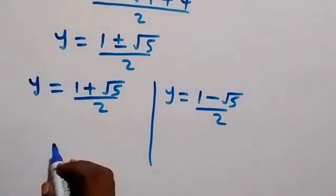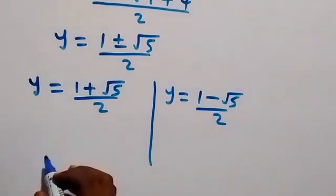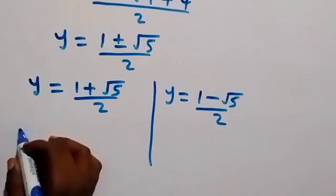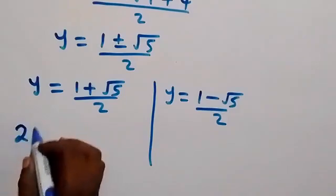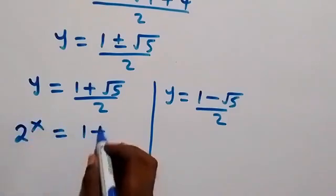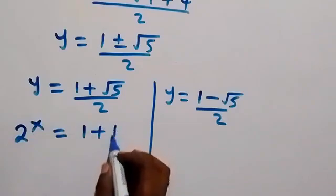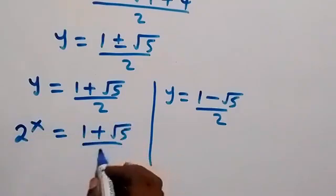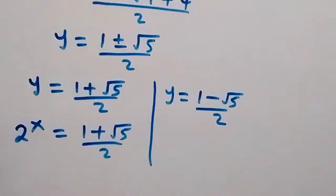We have two values of y. The first one: 2 raised to power x equals to 1 plus root 5 over 2.